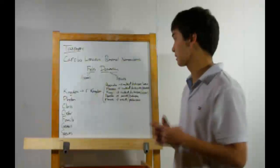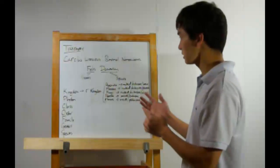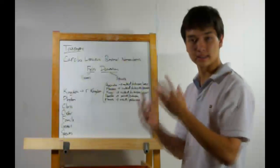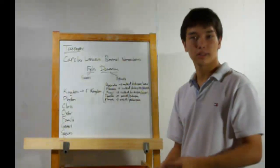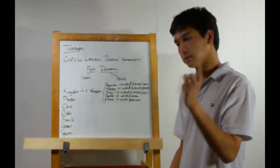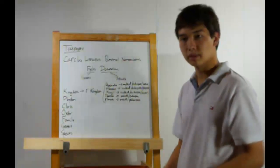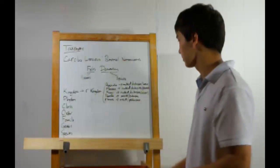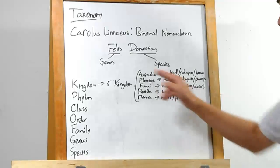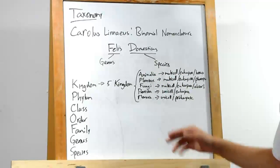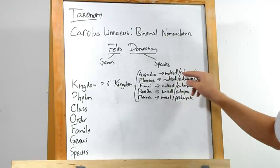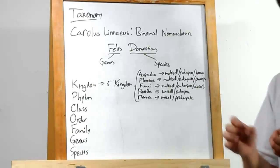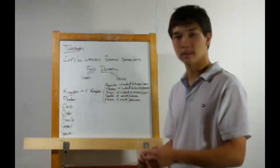Let's talk about the kingdoms. When Carolus Linnaeus was inventing his system, we had only two kingdoms: plants and animals. Now we tend to work with five. Those are animalia — animals — multicellular eukaryotes that are heterotrophic.